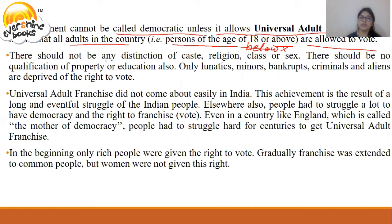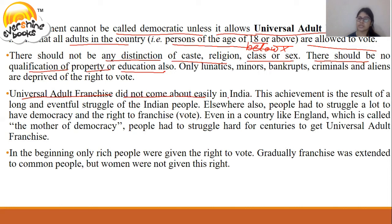There should be no distinctions of caste, religion, class, or sex for the right to vote. There should be no qualification of property or education either. The only criteria is age — it should be 18 or higher. Universal adult franchise did not come about easily in India; this achievement is the result of a long, eventful struggle of the Indian people.